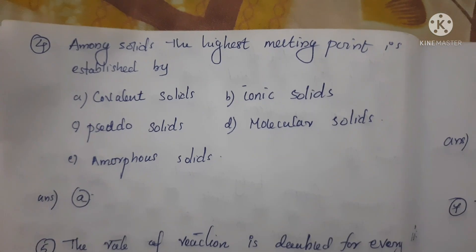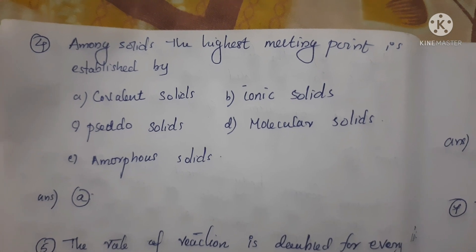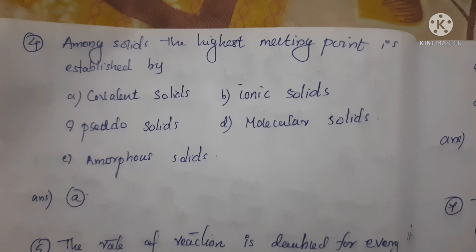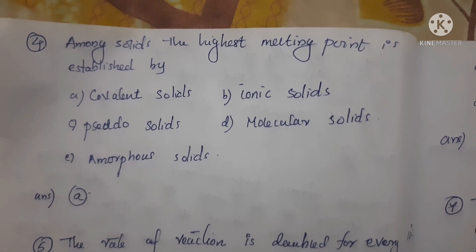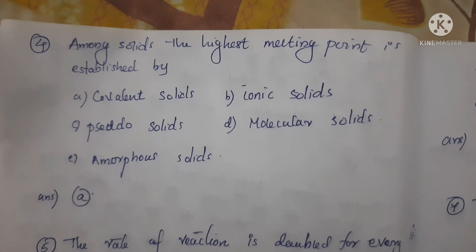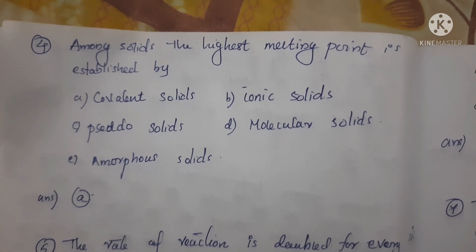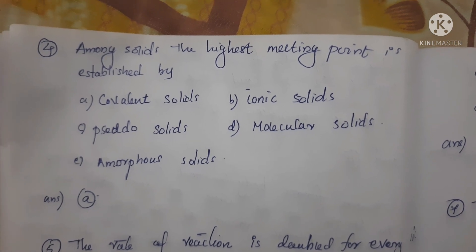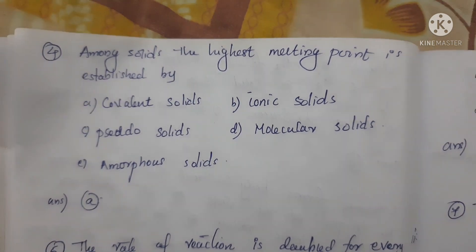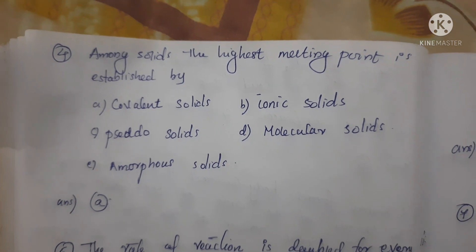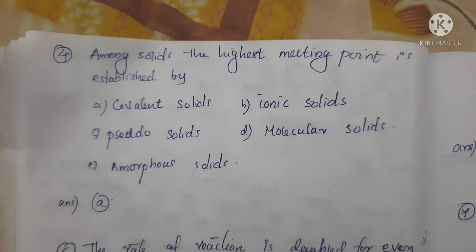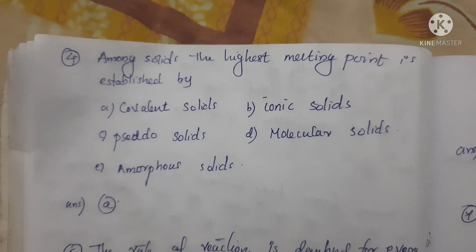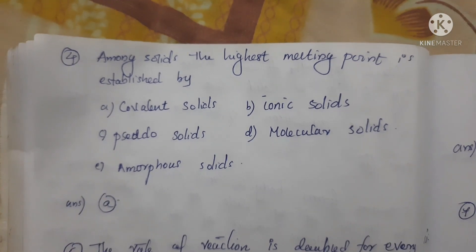Next question: Among solids, the highest melting point is established by which type? Option A covalent bond, Option B ionic bond, Option C pseudosolids, Option D molecular solids, Option E amorphous solids. Correct answer is Option A, covalent solids. The highest melting point is established by covalent solids like SiO₂ (quartz), silicon carbide, diamond, and graphite.